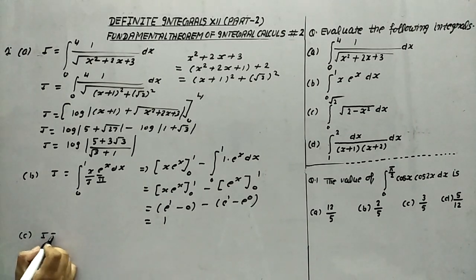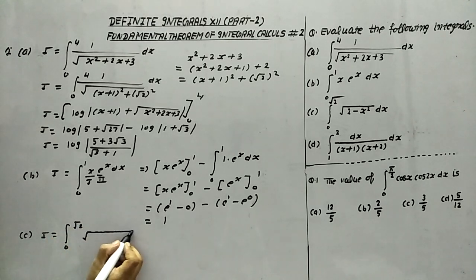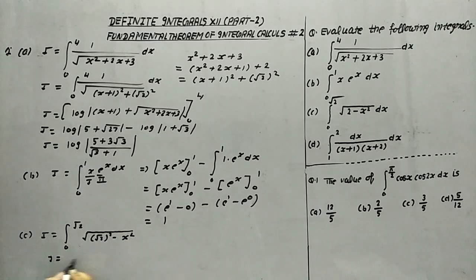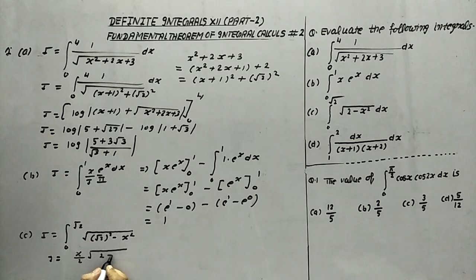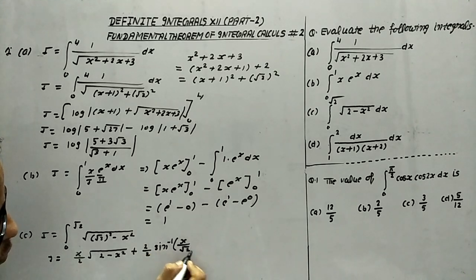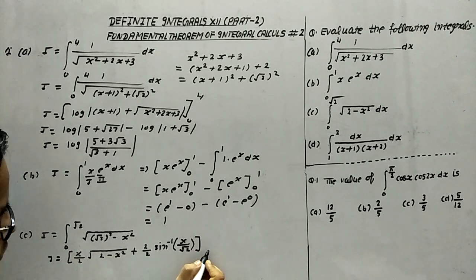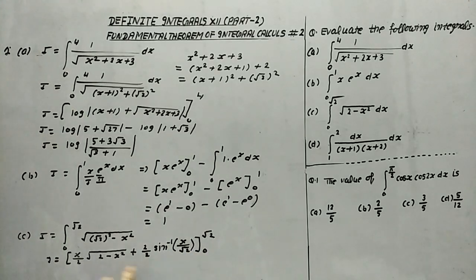Now in part c, we have to find out the integration from 0 to √2 of √(2 − x²), which becomes √((√2)² − x²). We apply the identity for √(a² − x²): the result is (x/2)·√(a² − x²) plus (a²/2)·sin⁻¹(x/a). Here a = √2, so this becomes (x/2)·√(2 − x²) plus (2/2)·sin⁻¹(x/√2), with limit 0 to √2.